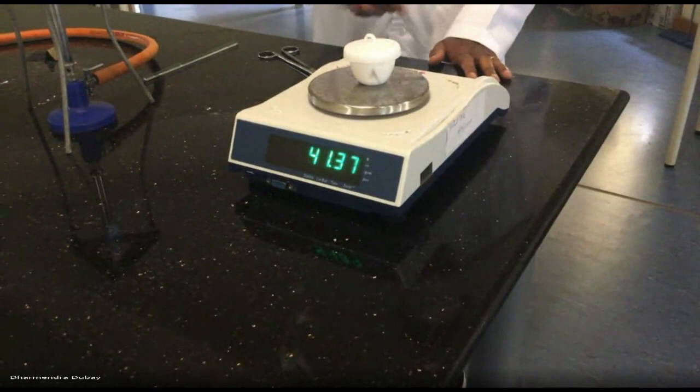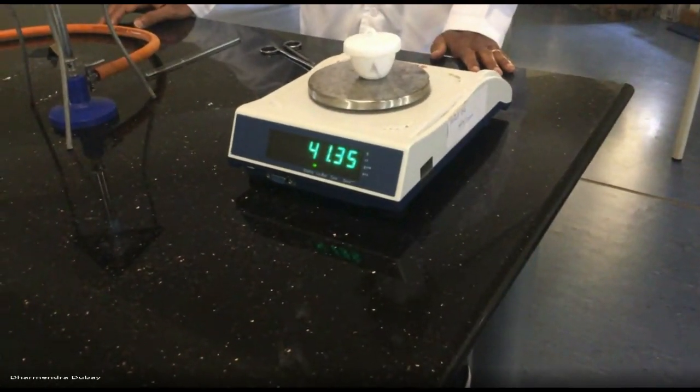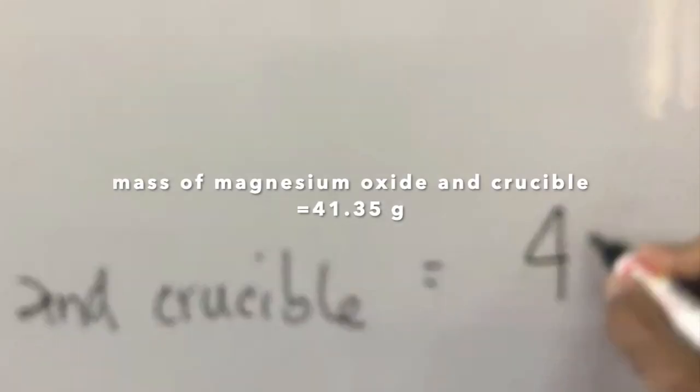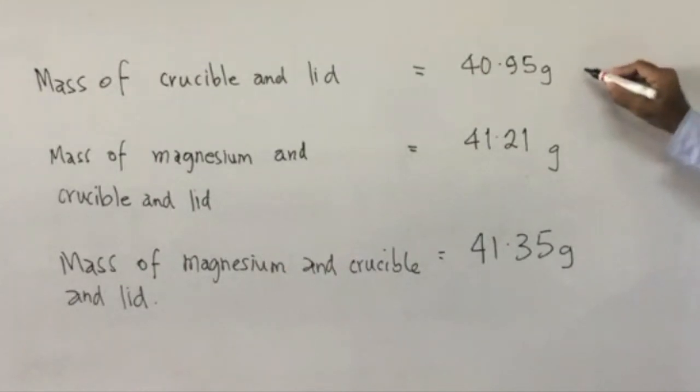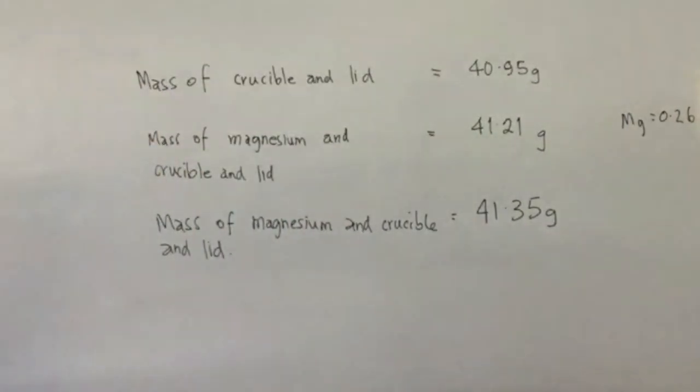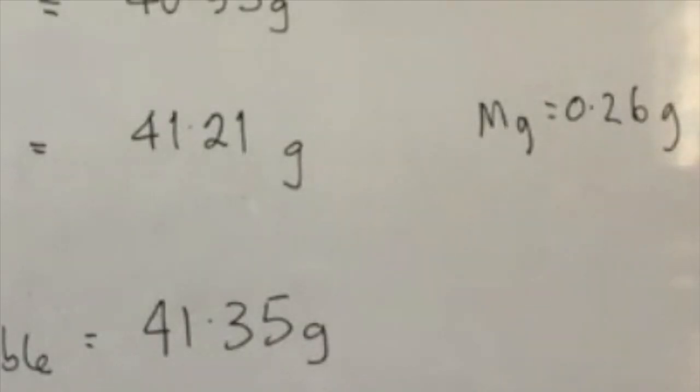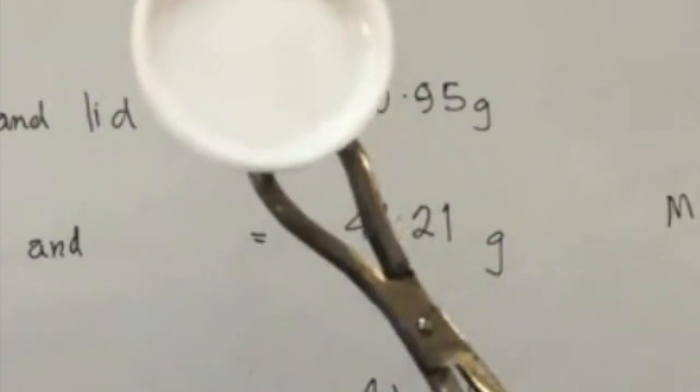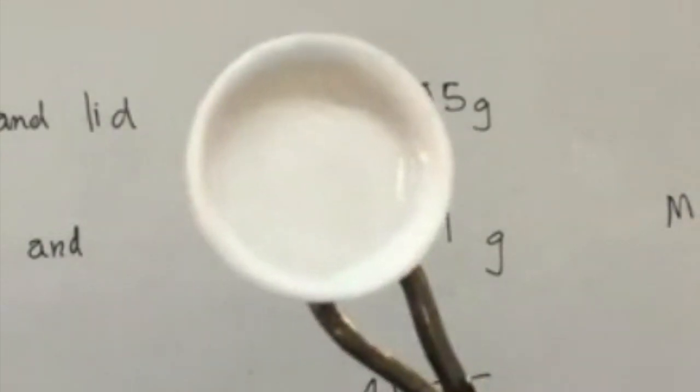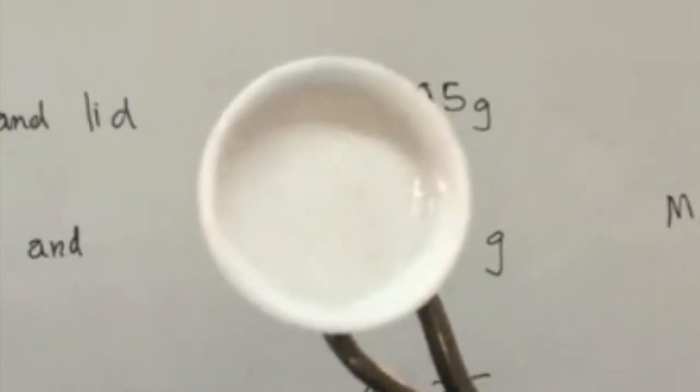All right, so we're getting 41.35. This difference here is the mass of magnesium used. So Mg that we use would be 0.26 grams. And then now after the oxygen is added to it, if anyone's had any doubt about whether this mass would go up, you see it's happened, it's gone up. Mr. Ranjan is bringing the crucible lid to show you. Yeah, the crucible lid has had a little bit of a coat of the oxide there as well. And that's interesting to know that.